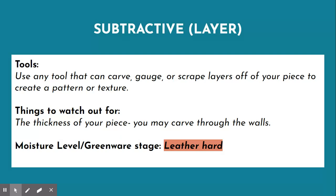Ribbon tools, wire loop tools, a paper clip — anything metal is helpful in removing clay. Things you may want to watch out for are the thickness of your piece. You don't want to carve all the way through the walls; however, if you have a thin piece of clay you will likely carve all the way through. The moisture level at this stage should be leather hard — not flexible, not bendable, but still has moisture so it's soft enough to carve.